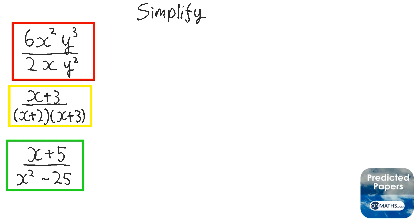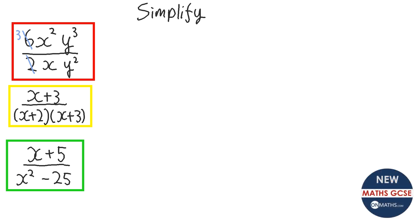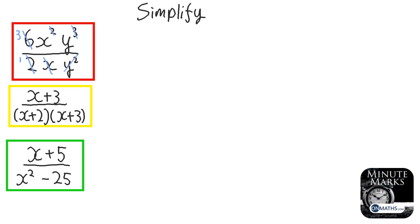In these questions we're looking at simplifying fractions. Let's go through the first one. We're looking at the things top and bottom that we can divide the fraction by. The numbers are nice and easy: 6 and 2 we can both divide by 2, so that will leave 3 there and 1 there. Looking at the next part: there's x squared and there's an x, so I can divide them both by x. x squared divided by x is just x, and x divided by x is just 1.